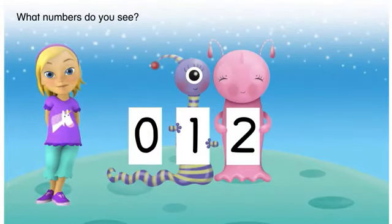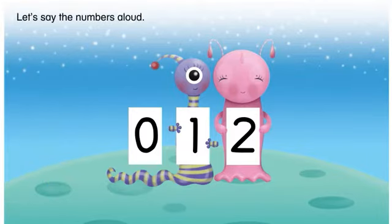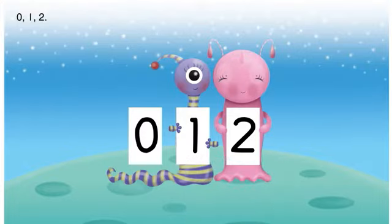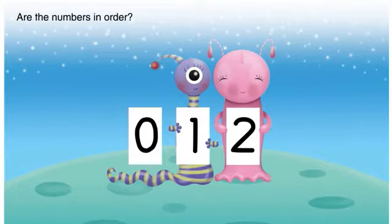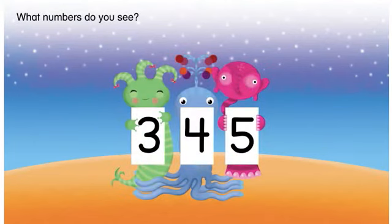What numbers do you see? Let's say the numbers aloud: zero, one, two. Are the numbers in order? The numbers are in order because two is one more than one, and zero is one fewer than one.